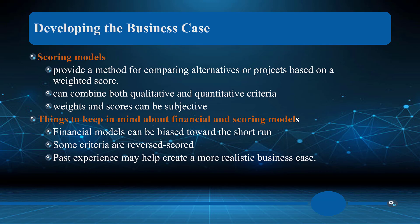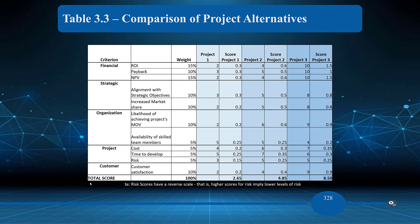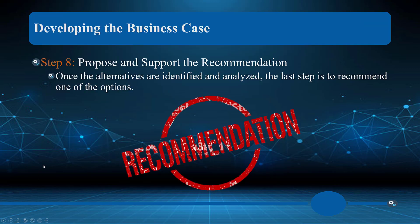Keep in mind that financial models can be biased towards the short run, some criteria are reverse-scored, and past experience matters. When comparing project alternatives — Projects 1, 2, and 3 — you normally won't find a variance between scores like 2.65 and 8.5; the scores will be much closer when the metric is applied equally. If you see outliers, ask yourself why that project is an outlier.